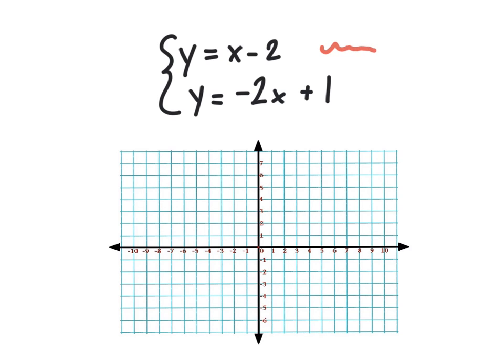I'm going to graph this top line in red, and the two pieces of information I need are the slope, which is m, and that's going to be 1. There's a slope number right there. But for rise-over-run purposes, I'm going to call that 1 over 1. The y-intercept is b, and that's this negative 2 here.